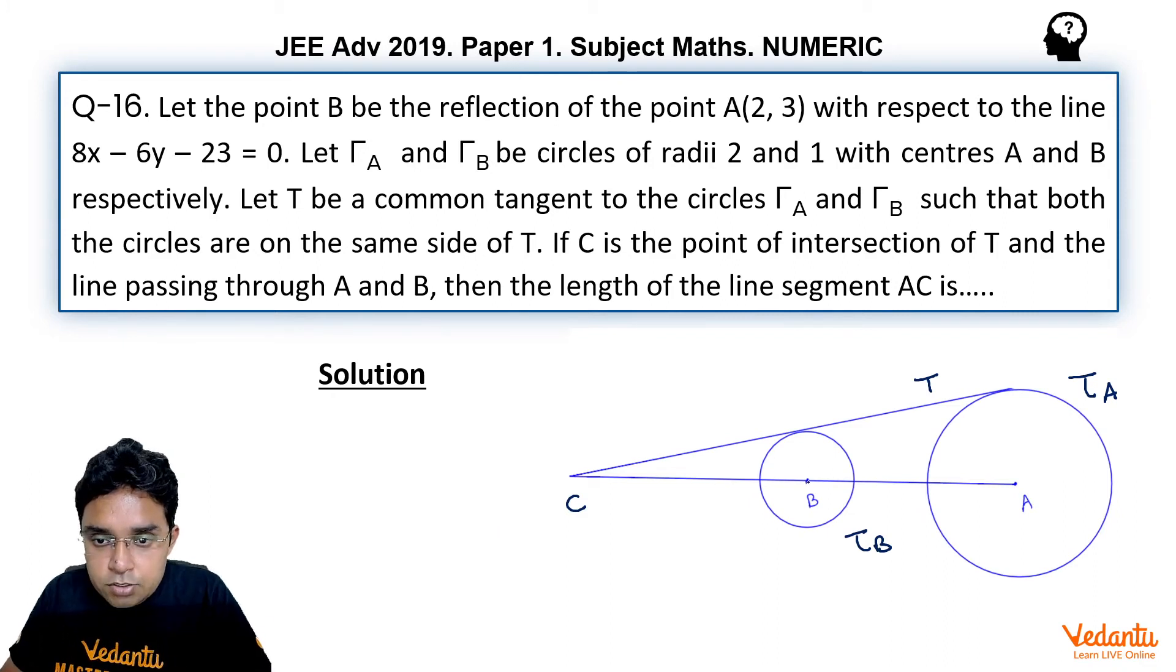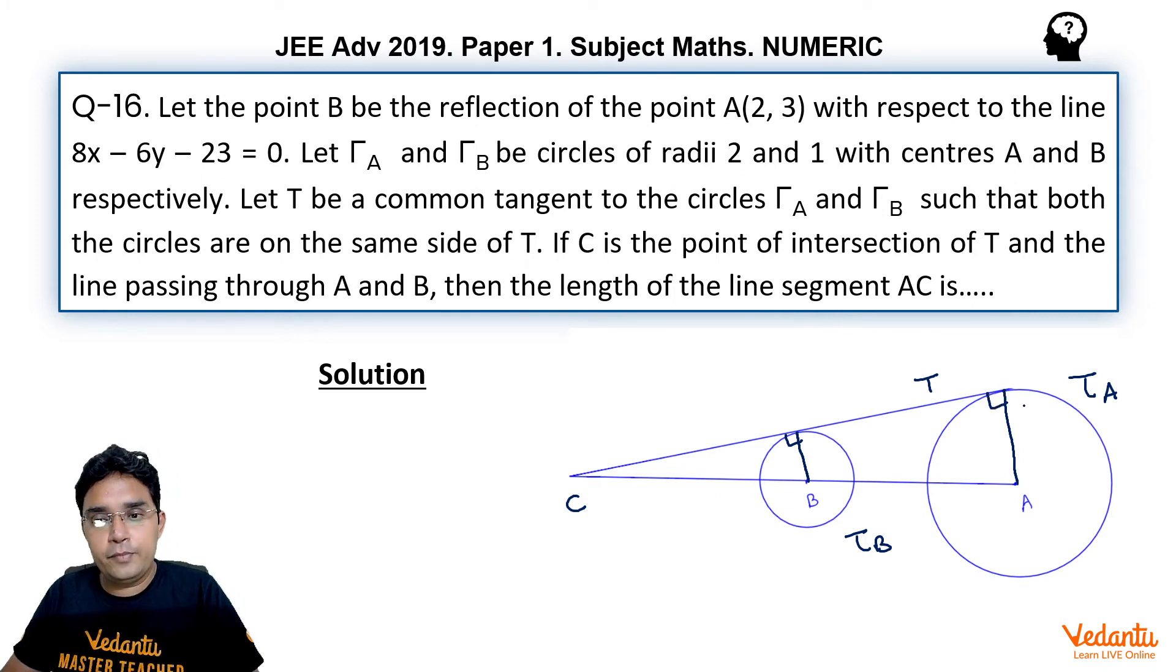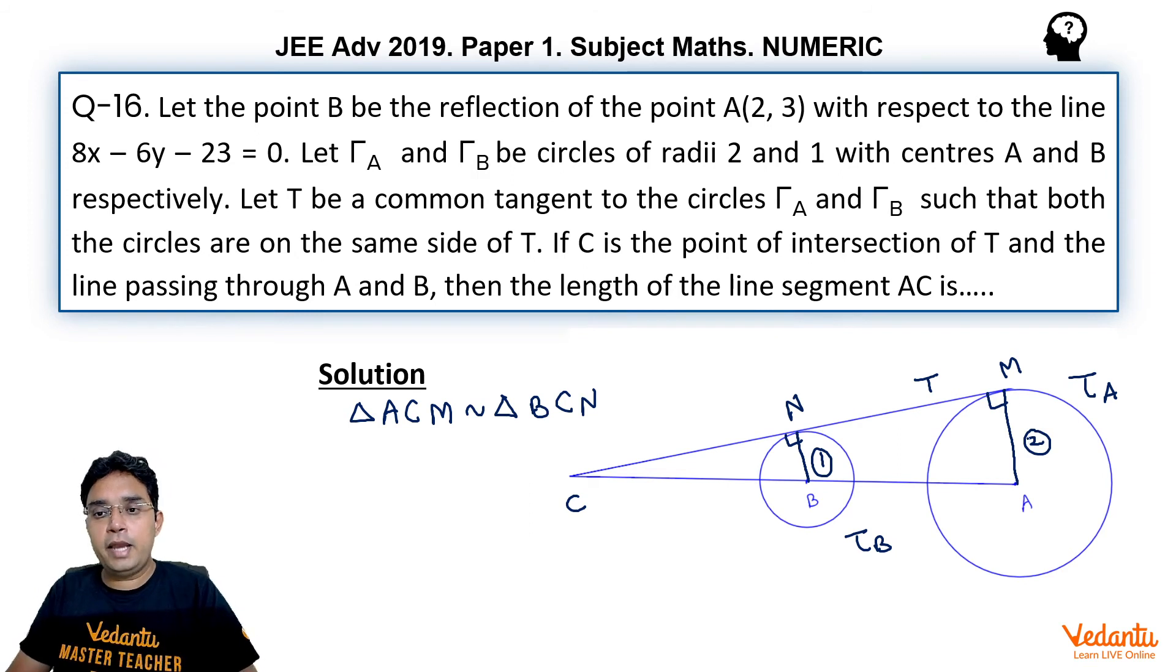Now to find this let us draw B to this point of contact. So this will be 90 degree and from A to this point of contact this will also be 90 degree. Let us call this as M and this as N. So we can see clearly that triangle ACM would be similar to triangle BCN and the ratio of their similarity would be 2 because one corresponding side is radius of bigger circle and one corresponding side is radius of the smaller circle which are 2 and 1.